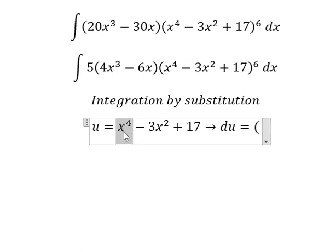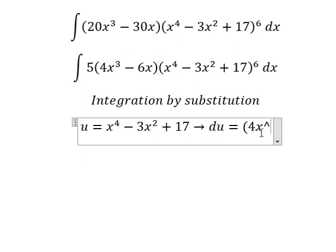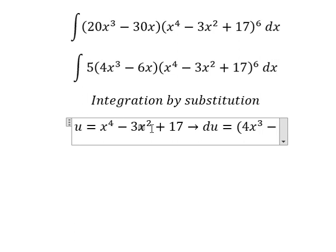The derivative of x^4 is 4x^3. The derivative of -3x^2 gives us -6x, and combining the constants we get du = (4x^3 - 6x)dx.